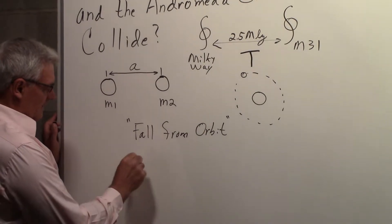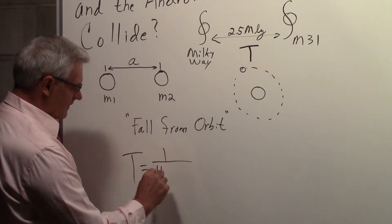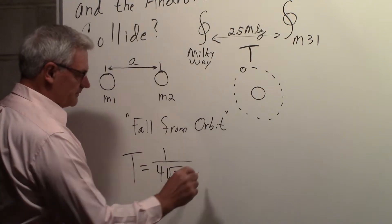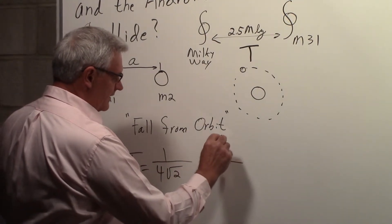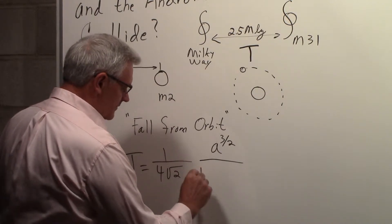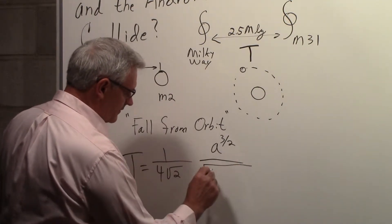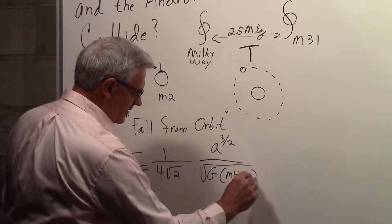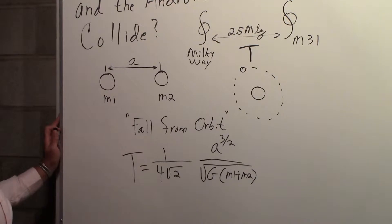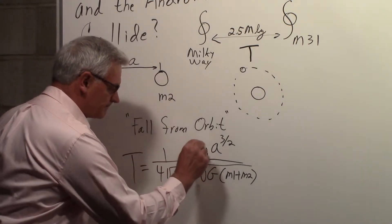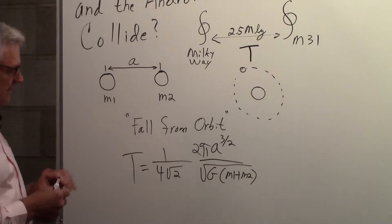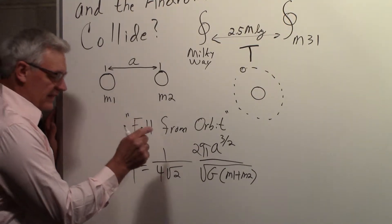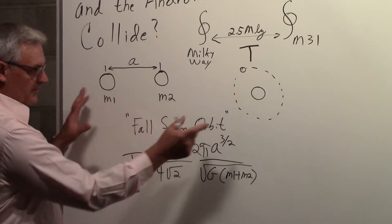The time that takes is 1 over 4 times the square root of 2 times A to the 3 halves over the square root of G times M1 plus M2. We need a 2 pi. So that's the equation that you will find in that text working this problem.